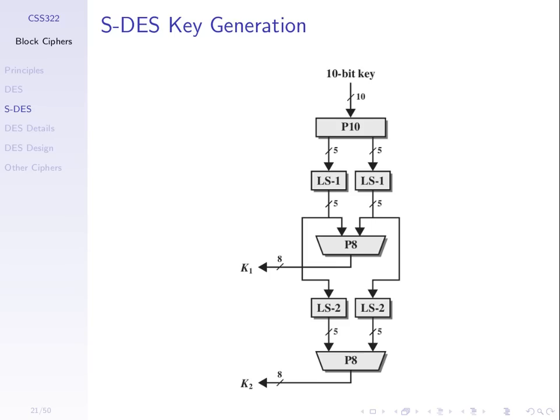We then feed those 10 bits into P8, another permutation. P8 takes 10 bits in and produces 8 bits out — it permutes and removes two bits — giving us K1, the first round key. The outputs of those left shifts are also fed down to perform another left shift, this time by two positions. P8 is then applied again to produce the second round key K2.